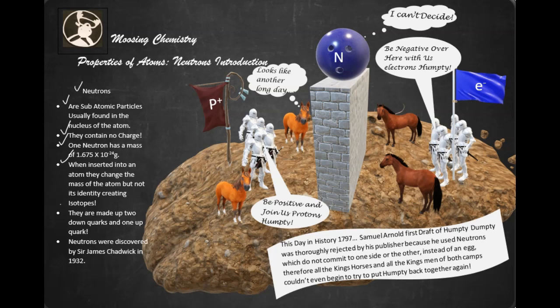Neutrons are made up of two down quarks and one up quark, which is opposite of protons. Remember that protons are made up of two up quarks and one down quark. So neutrons again are made up of two down quarks and one up quark.